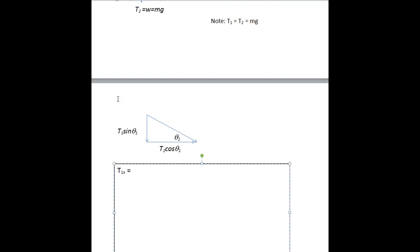T1x is equal to T1 cosine theta. And so that's equal to Mg cosine theta.